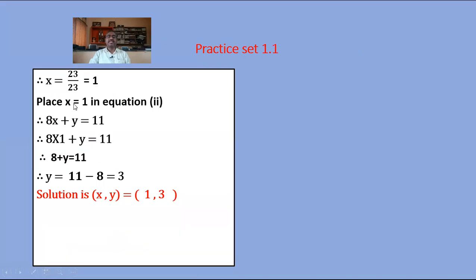Substitute x equals 1 in equation 2: 8x plus y equals 11. So 8 times 1 plus y equals 11, giving 8 plus y equals 11. Moving 8 to the RHS: y equals 11 minus 8 equals 3. The solution of the equation is x equals 1 and y equals 3.